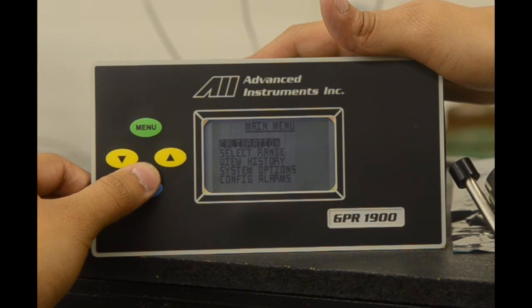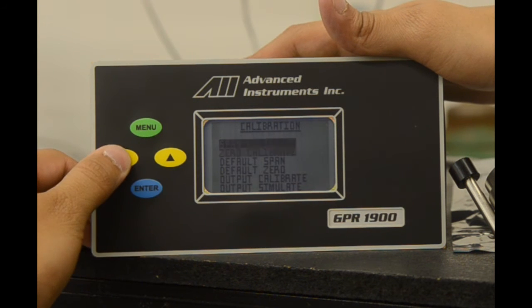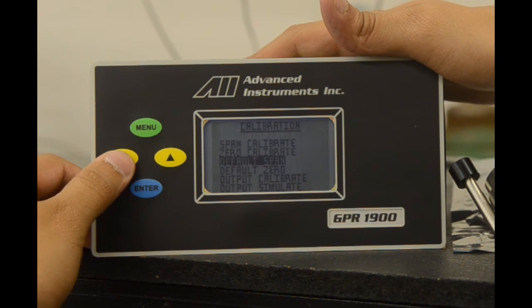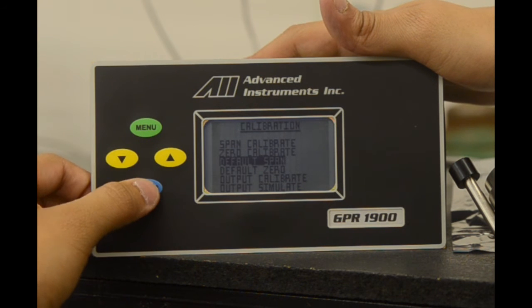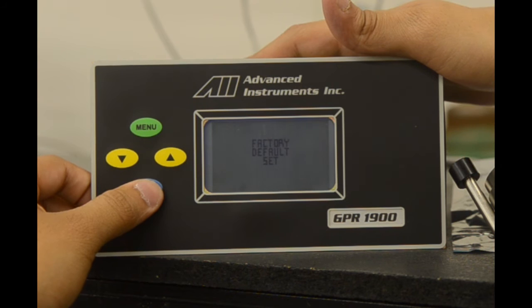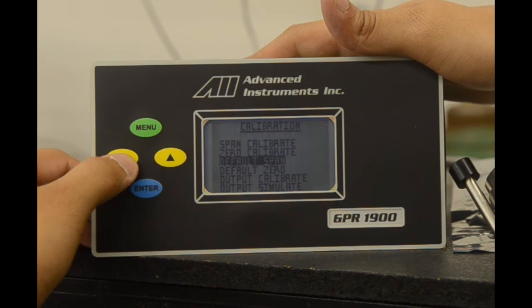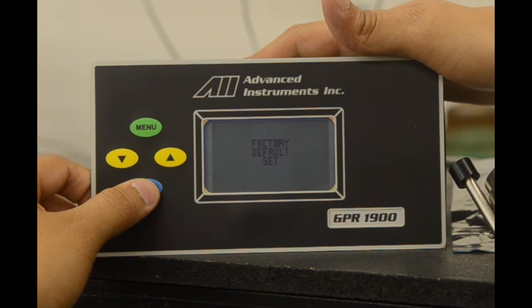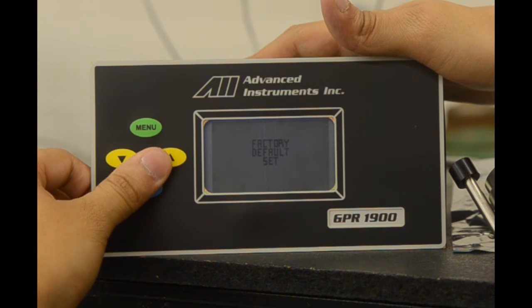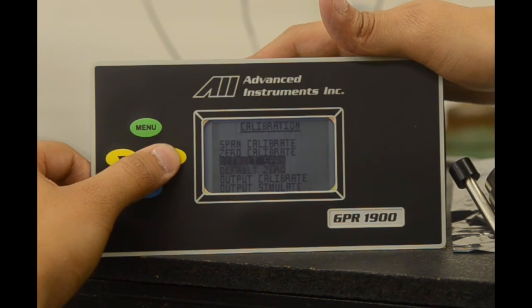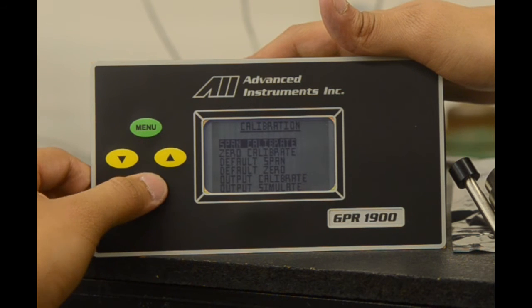We will now perform a calibration. We hit enter on the calibration menu. We'll be taken to the main calibration screen. We'll go down to default span and select enter. This will clear off any prior presets done on the calibration. And we do the same with default zero. As you can see, it will say factory default set.